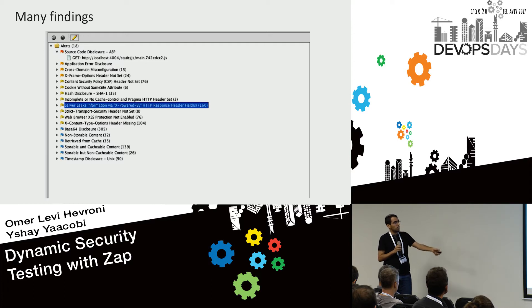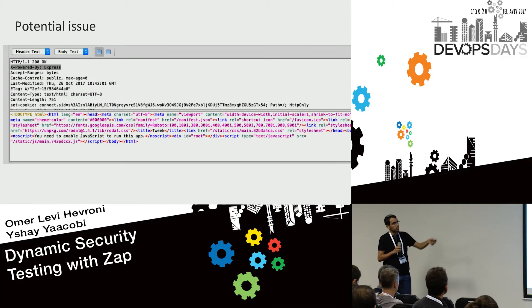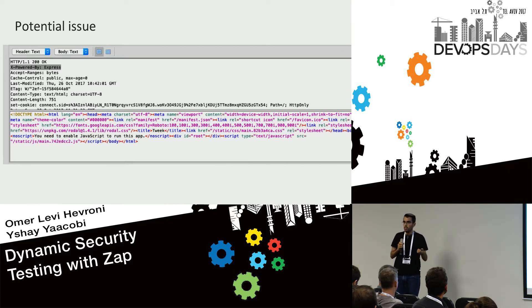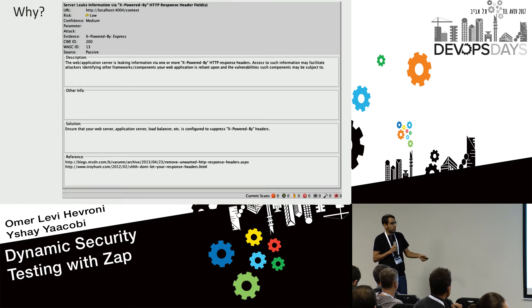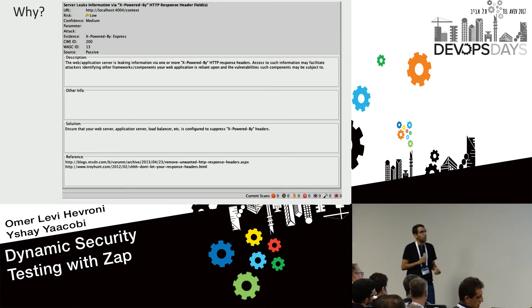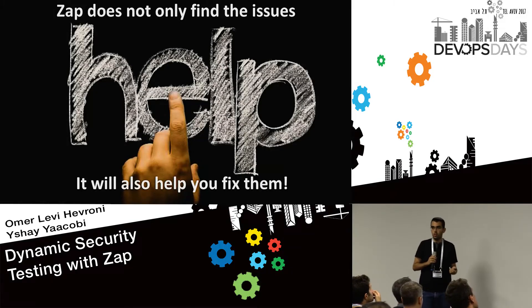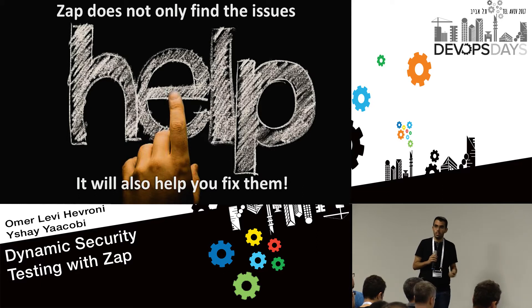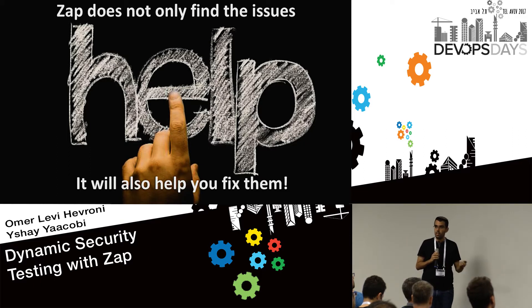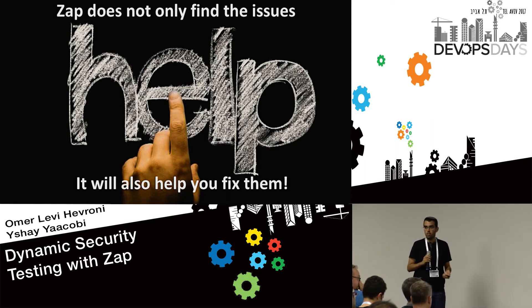Now we go through each alert and decide if it's a real issue or a false positive, as with any automated tool. For example, ZAP flagged a response header — the server is leaking information about the stack we're using through this header. ZAP gives a description, the risk level, and crucially a solution showing how to fix it, plus references to blog posts to learn more about why it's a problem. This is a really cool feature — ZAP not only tells you what the problem is, it helps you fix it. That's not always the case with security tools or the security community in general.